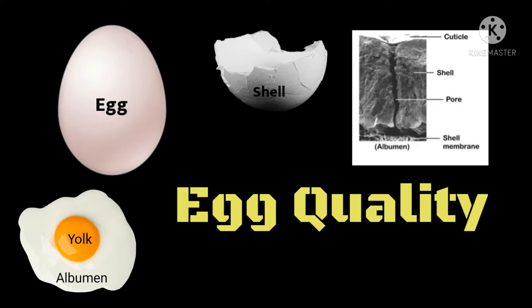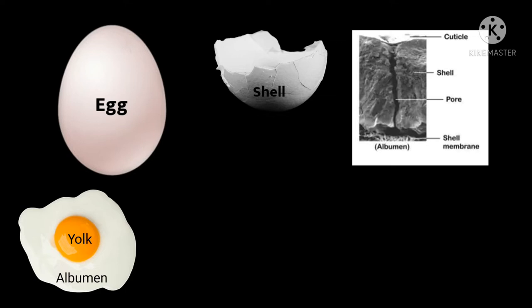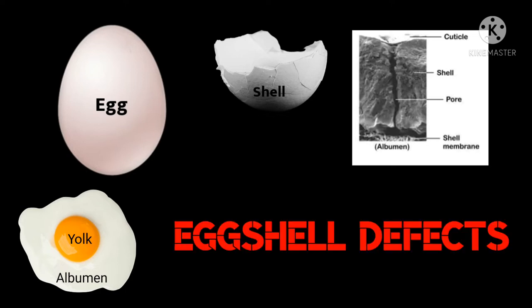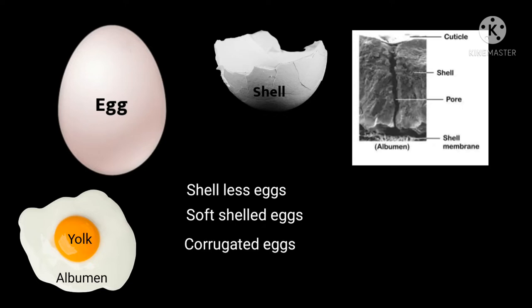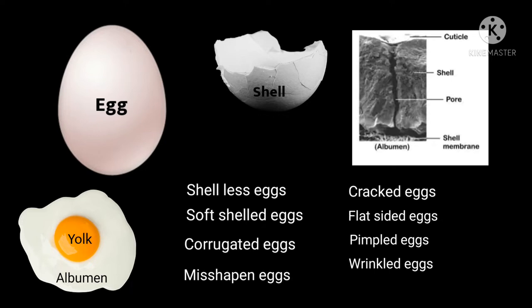In this chapter, I have discussed different shell quality defects like shelless eggs, soft shelled eggs, corrugated eggs, cracked eggs, flat sided eggs, pimpled eggs, wrinkled eggs, misshapen eggs, etc.